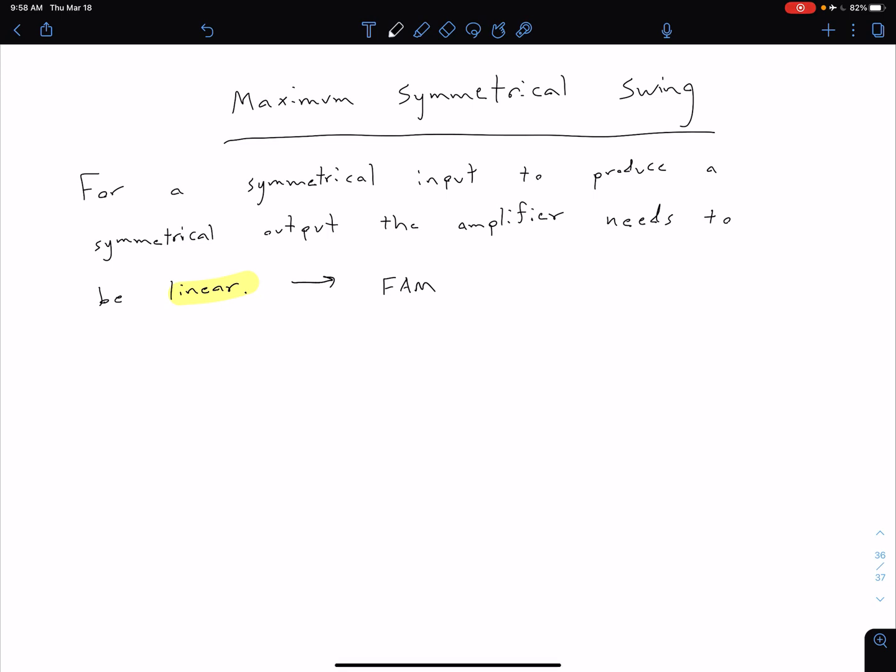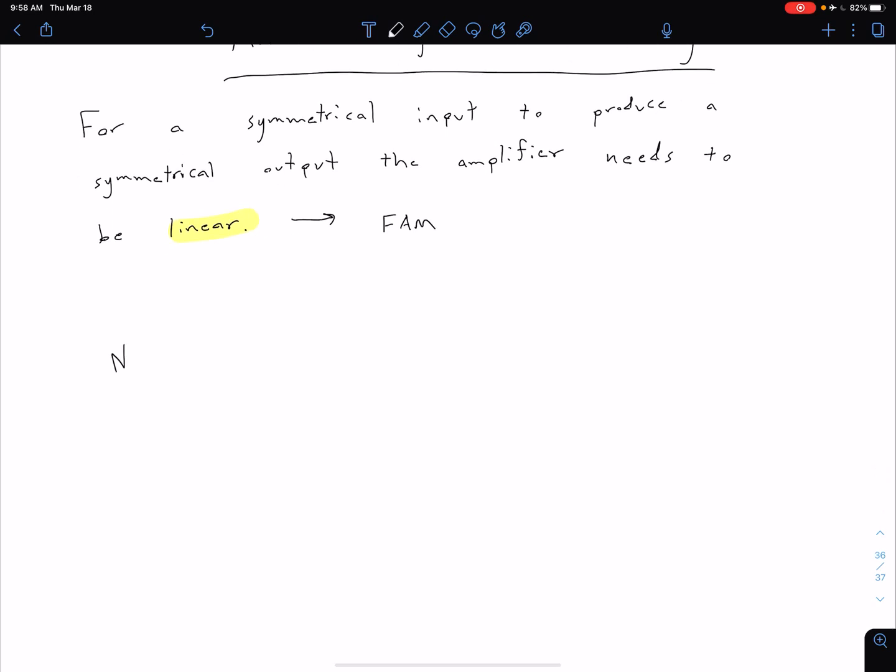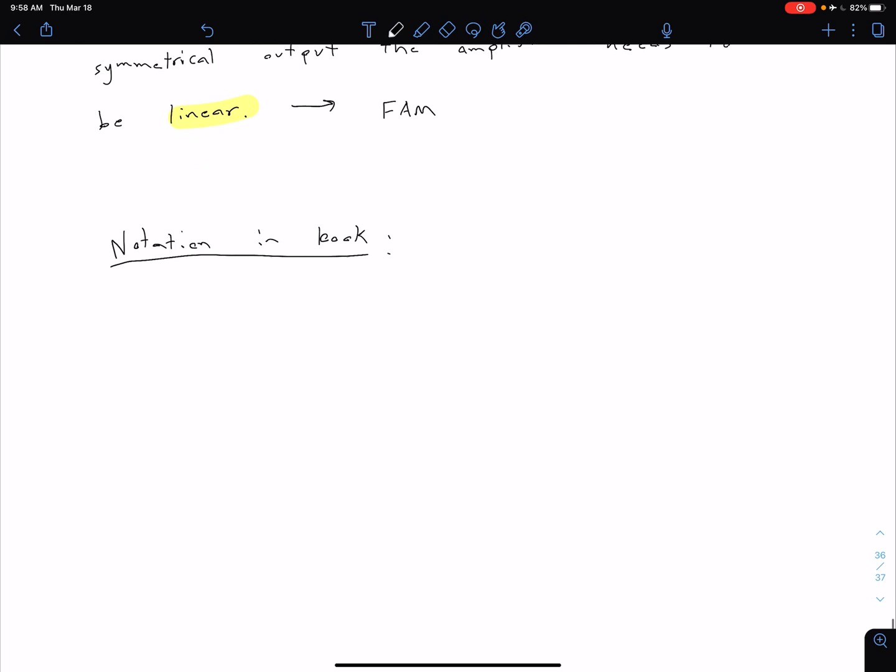Our maximum symmetrical swing is sort of just a way to say how much can we vary that output before we reach that cutoff state. I want to talk about some notation in the textbook just because at times it can be a bit confusing, but as long as you grasp the ideas behind it, I think you can do well to recognize what it's talking about.